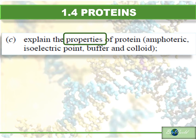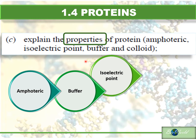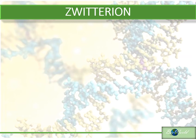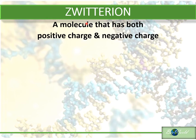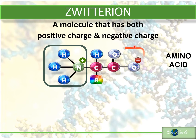Since we now know how condensation occurs to form a protein, let's move on to the properties of protein, which include amphoteric, buffer, isoelectric point, and colloid. To make all these properties possible, we must understand one other characteristic of protein — the zwitterion. A zwitterion is a molecule that will have both positive as well as negative charge. We've seen this in an amino acid: the amine end is positive because the hydrogen from the acid end has migrated to the nitrogen, and the acid end is negatively charged because it has lost the hydrogen.